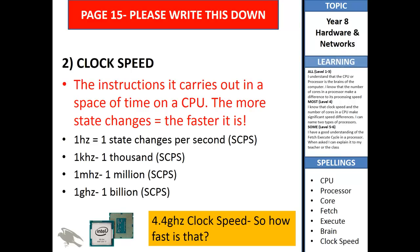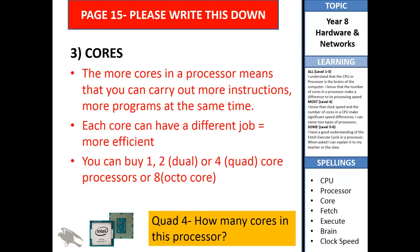Write as much as you can, particularly the red writing. Subtitle underneath that: 'Cores'. The more cores in a processor means that you can carry out more instructions and more programs at the same time. Each core can have a different job - they're like different butlers. You can buy dual or quad core processors, or octo core processors as well. The more cores you have, the more efficient and potentially faster it can be.